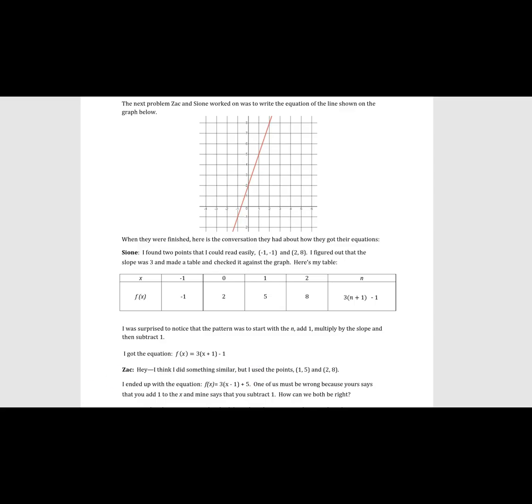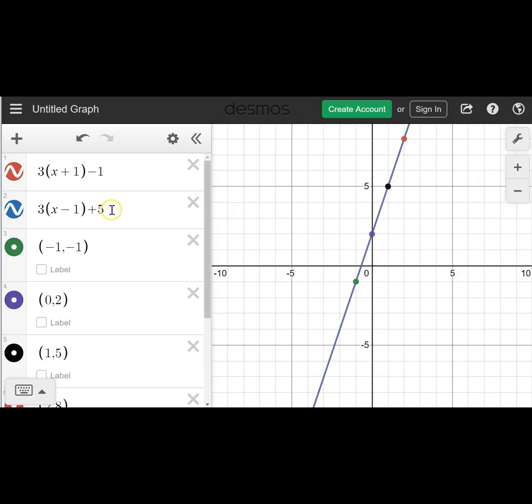So what we learned from this is it doesn't matter which point you use, whether like Zac used (1, 5) or Sion used (negative 1, negative 1), as long as you follow a certain pattern, you can write a linear function rule in point-slope form.